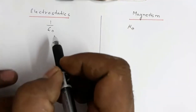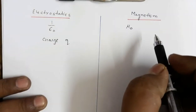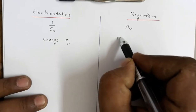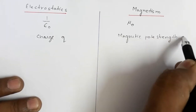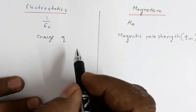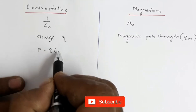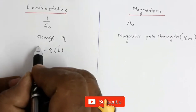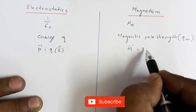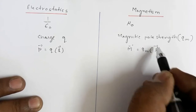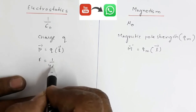In electrostatics we use the charge Q, whereas here we use the magnetic pole strength Q_M. The electric dipole moment is given by P = Q × length of the dipole. The magnetic dipole moment is the pole strength times the length of the dipole.